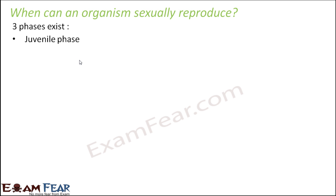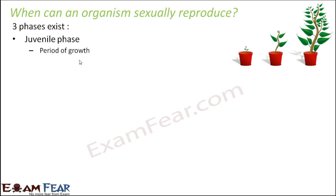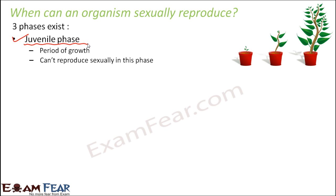What are those three phases? The first is the juvenile phase — the period of growth. This is the phase when the organism, after being born, just grows. This applies to both plants and animals, since sexual reproduction is present in plants also. This is the phase where the organism cannot reproduce sexually — it is just growing, whether plant or animal. So it is the growth phase. In plants, it is also known as the vegetative phase.